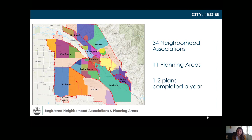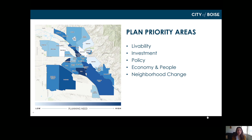We have 34 registered neighborhood associations grouped into 11 planning areas. If we complete one to two neighborhood plans a year, that would take almost 11 years for every neighborhood to have an updated plan. So we've created a plan priority index that helps us strategize where we'll work with neighborhoods, looking at indicators around livability, investment, policy, the economy, and neighborhood change to find our highest priority areas.